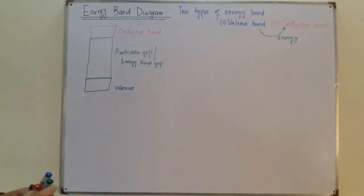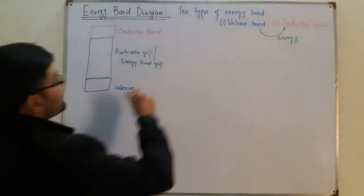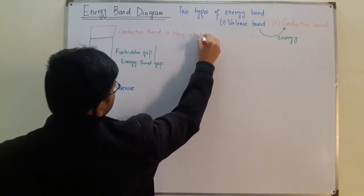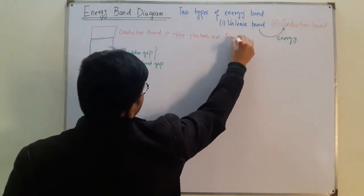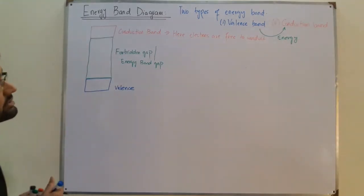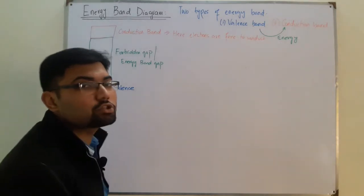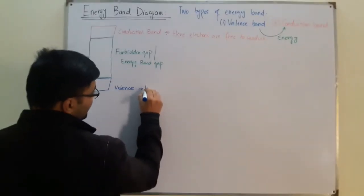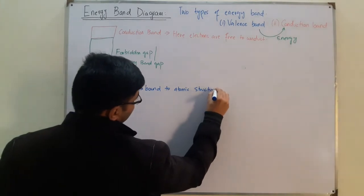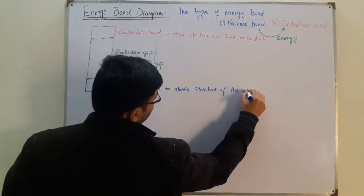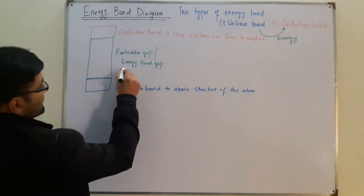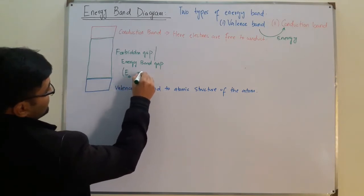In the conduction band, electrons are free to conduct. In the valence band, electrons are bound to the atomic structure of the atom. The forbidden gap, also called the energy gap, is represented by E₀ or Eg. Electrons are not allowed to exist in this forbidden gap region.